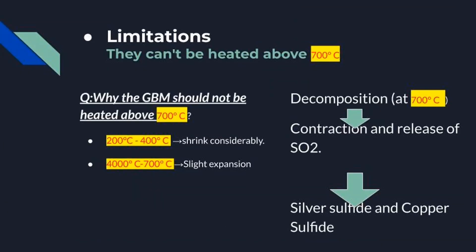An important limitation: gypsum bonded materials should not be heated above 700 degrees Celsius. This is important for professional examinations. Between 200°C and 400°C, gypsum bonded materials shrink considerably. Slight expansion occurs between 400°C and 700°C, after which a large contraction occurs. This latter shrinkage is caused by decomposition and release of sulfur dioxide, which not only causes decomposition but also contaminates the casting by sulfur dioxide fusing with silver and copper.